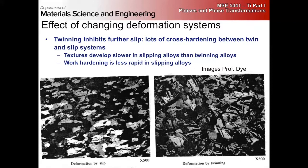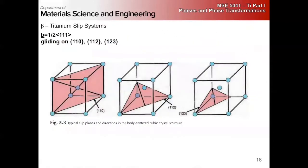And so again, we have lots of cross hardening between twin and slip systems. Twinning gives us very large, very rapid texture development and very rapid amount of work hardening. So that's deformation in HCP.